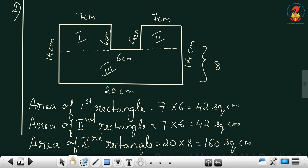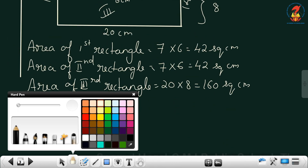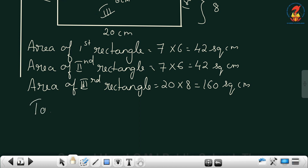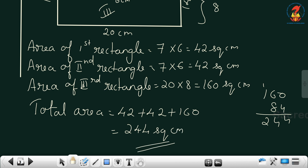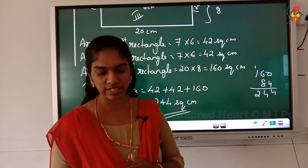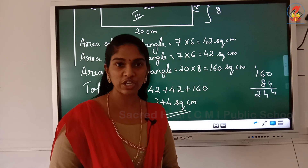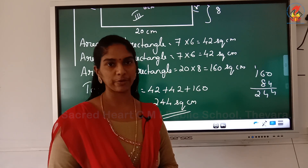So you got the area of the 3 rectangles. Total area is equal to 42 plus 42 plus 160. Now 42 plus 42 is 84, so the total area is 244 square centimeter. So you get a figure, split it into different shapes, find out the area of each shape, and finally find out the total area.